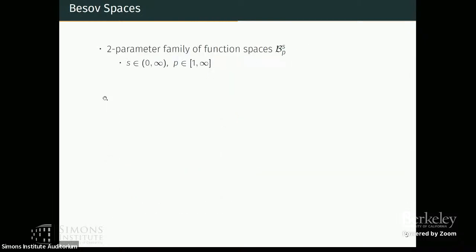So Besov spaces are just a two parametric family of function spaces. You can just think of this as a way of measuring the smoothness of your classes of functions. So S here is the measure—in short, the number of derivatives that it has and the boundedness of these derivatives in the LP norm. So all you need to remember is that a Besov space is just a space of smooth functions, and we can measure different smoothness by different values of its parameters.